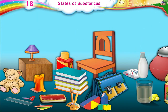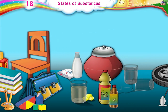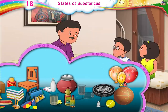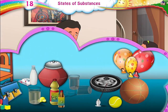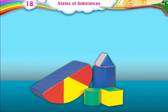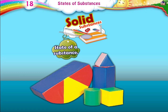There are many substances in our surroundings which keep their own shape no matter where they are placed. What are these substances called? Substances that maintain their shape all the time are said to be solid substances. Solid is a state of a substance.